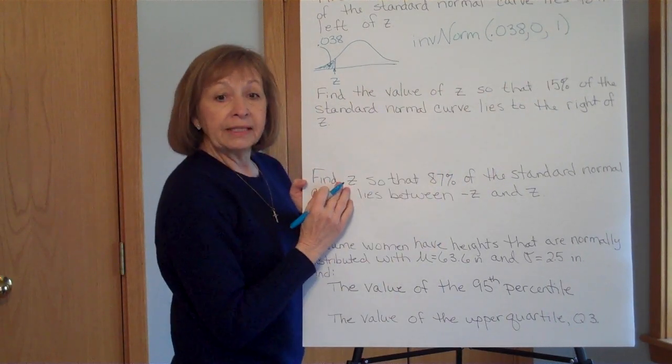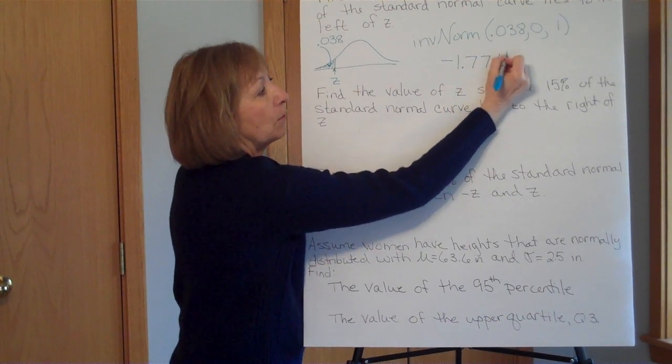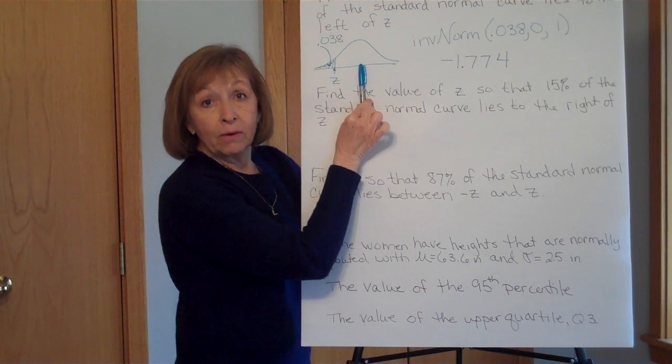And when you go through and calculate that, you should get a negative 1.774. And that makes sense, because remember, with 0 in, is the mean of the z-scores.